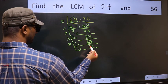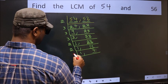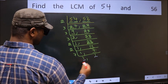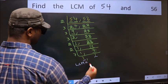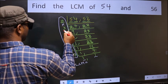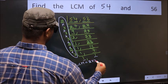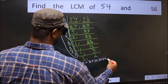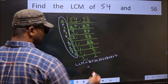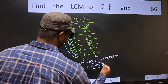Now here we have 14. 14 is 2×7 is 14. Now we have 7 — 7 is a prime number, so 7×1 is 7. So we got 1 in both the places. So our LCM is the product of these numbers, that is 2×3×3×3×2×2×7. When we multiply these numbers we get 1512, which is our LCM.